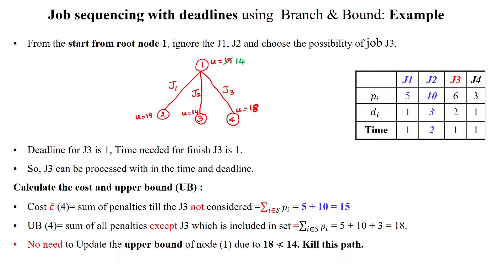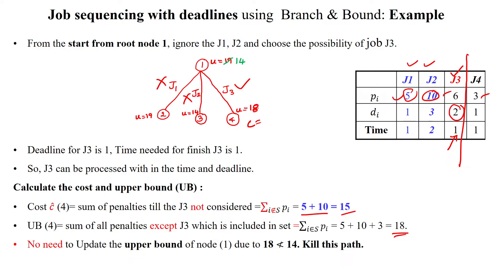The next possibility: the user ignores job 1 and job 2 and selects job 3. Deadline is 2 days and time is 1 day, so it is feasible. Cost is the sum of penalties of jobs not considered — j1 and j2 — which is 5 + 10 = 15. Upper bound is sum of penalties except job 3: 5 + 10 + 3 = 18. Since 18 is greater than 14, we kill this path — no need to explore further.